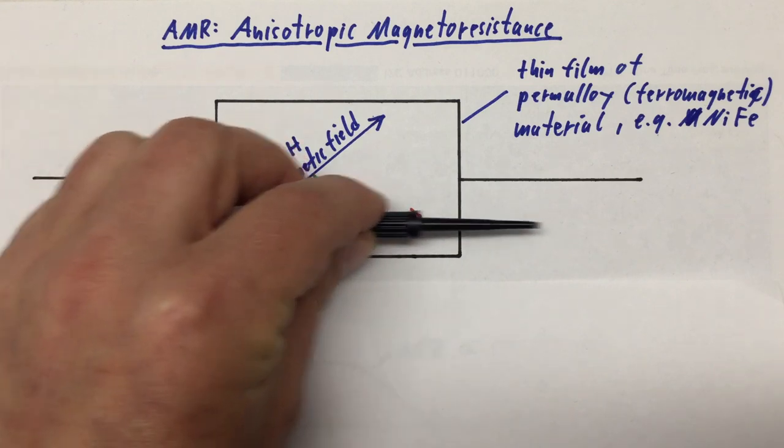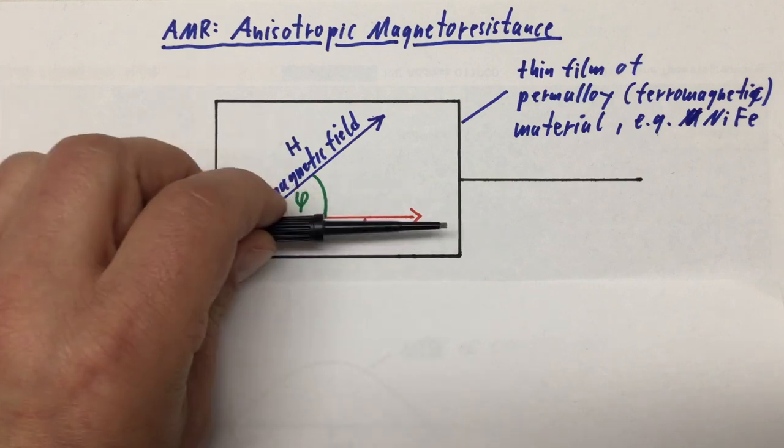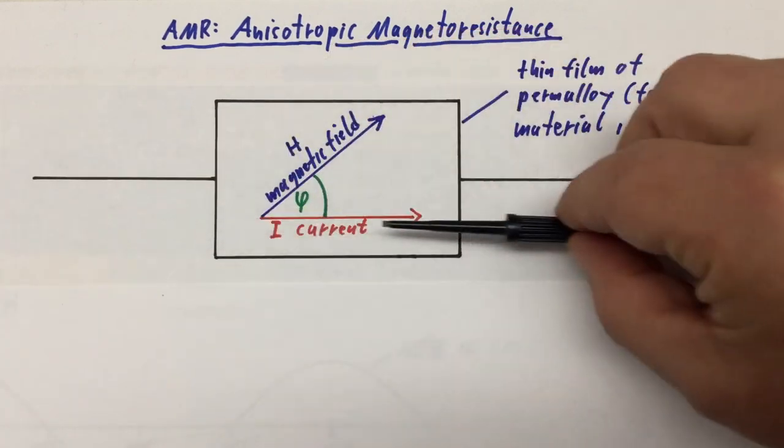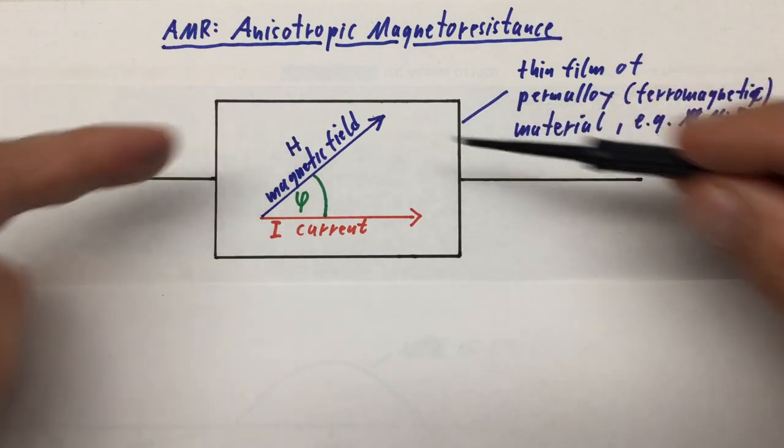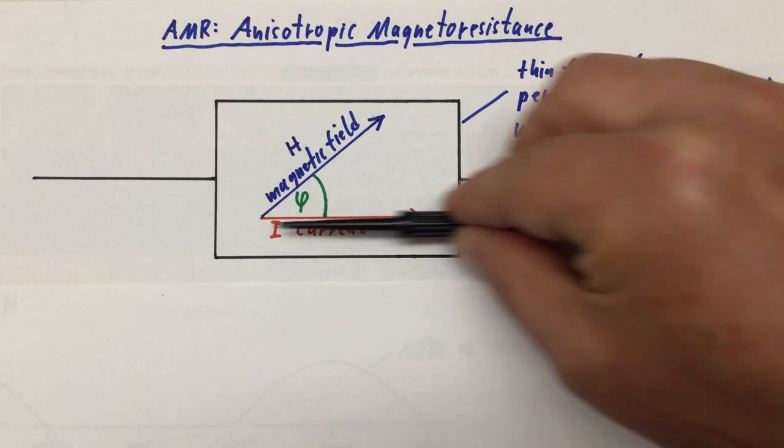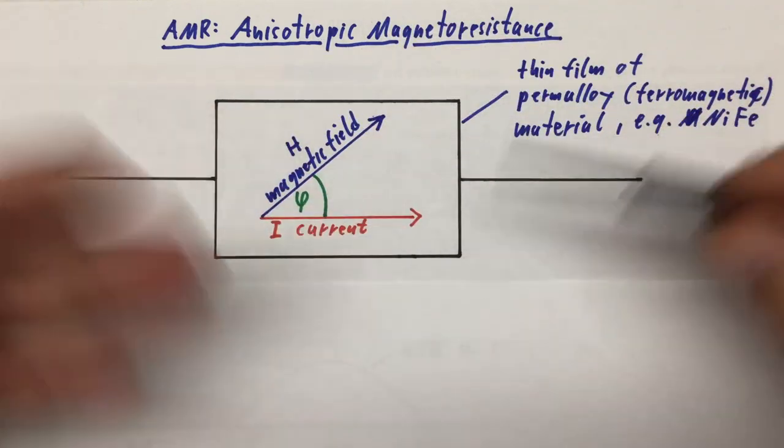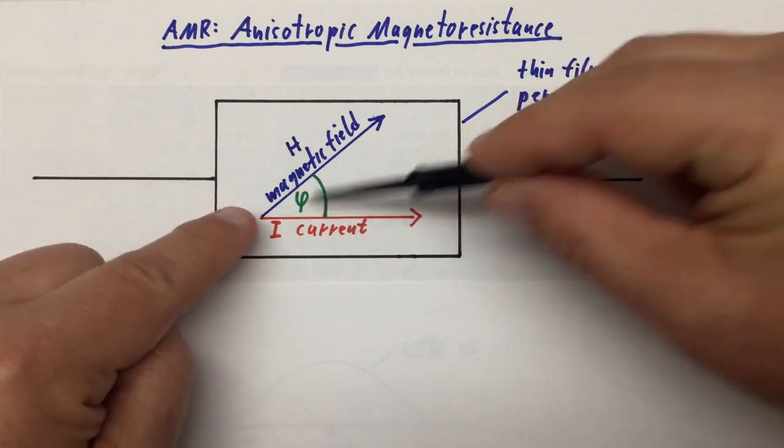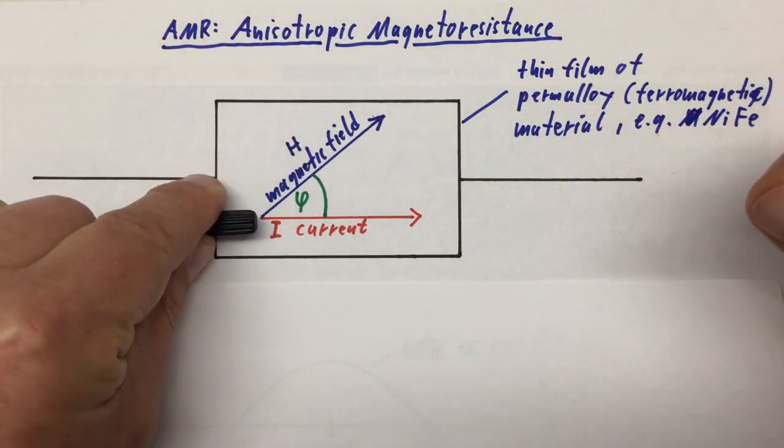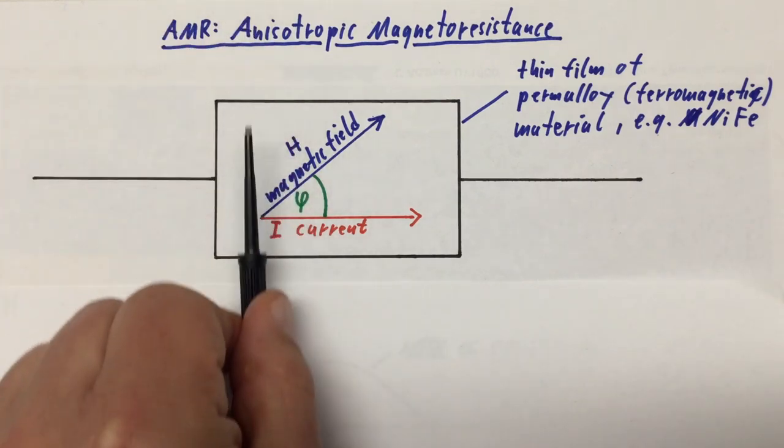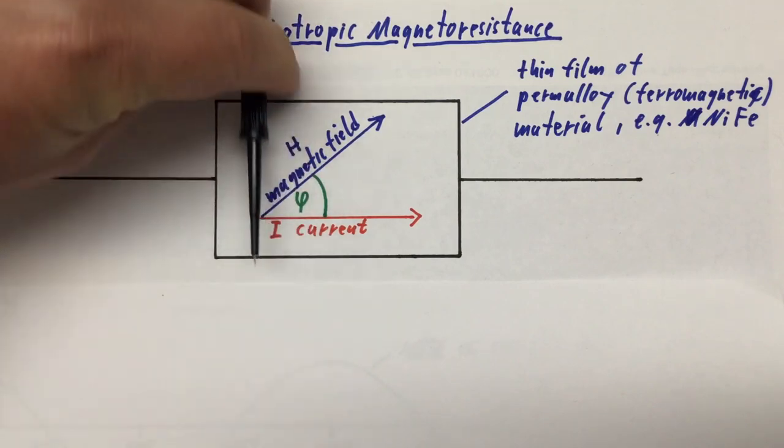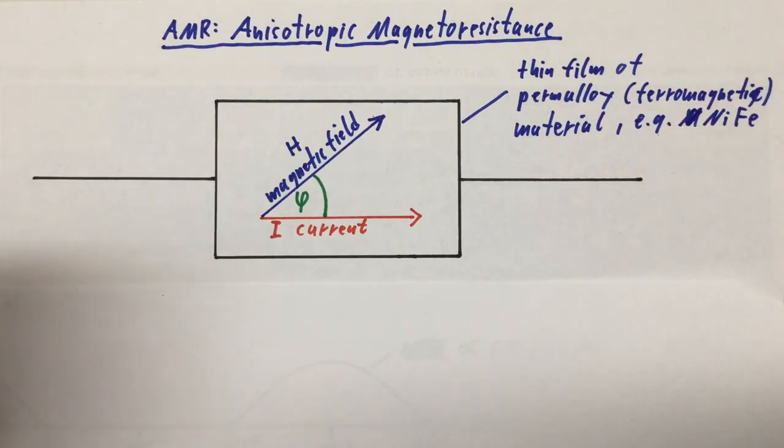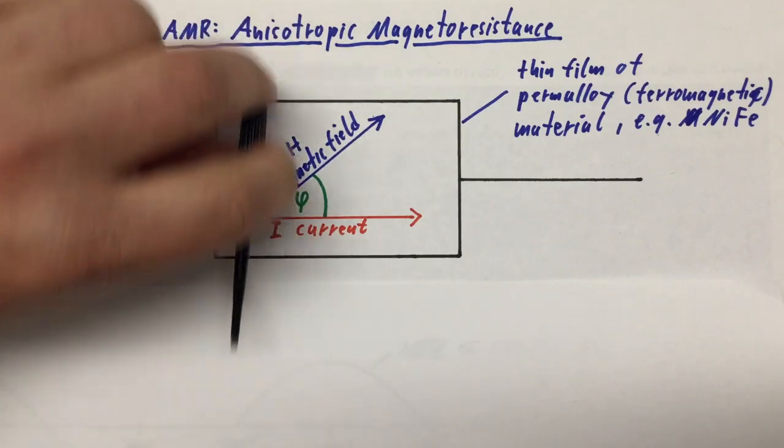If you now apply a magnetic field in the plane of our thin film, the resistance will change in the following way. When the magnetic field lines are parallel to our current flow, so either at zero degrees or 180 degrees, you will get a maximum increase in resistance. Please note that the direction of the magnetic field doesn't make any difference as long as it's parallel. So you get a maximum increase in resistance at zero degrees and 180 degrees.